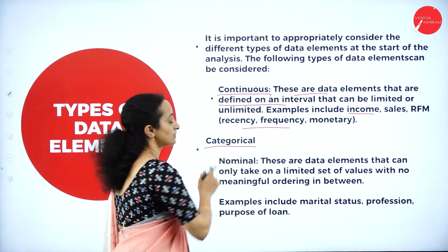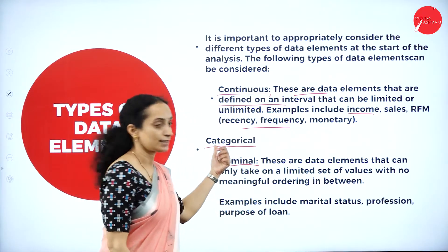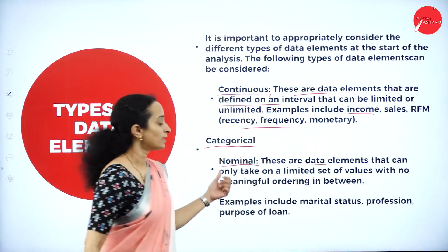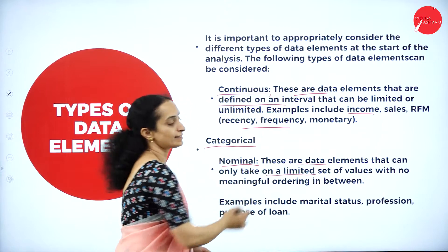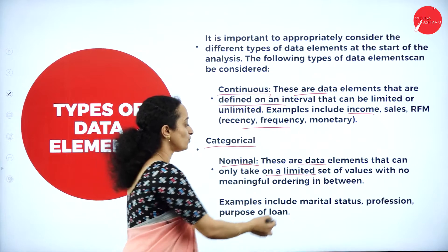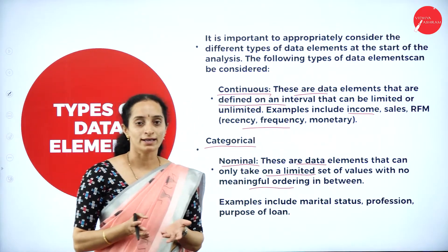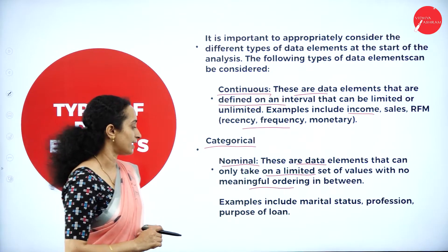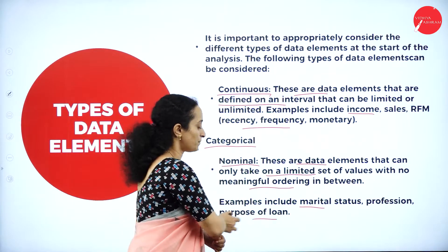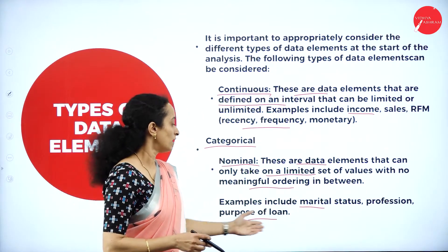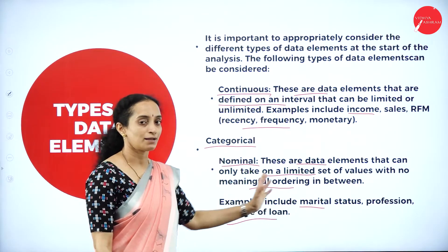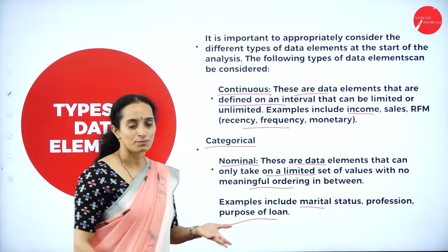Then we have a type known as categorical. You can categorize data as nominal — these are data elements that can only take a limited set of values with no meaningful ordering. There will be no order, just a collection of data. Examples are marital status, profession, and purpose of a loan. These are not in any order and have no relationship with each other, but they are needed — which is called nominal.